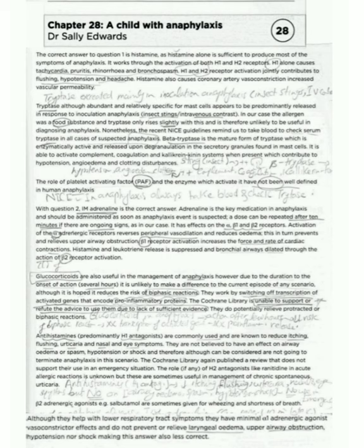The role, if any, of H2 antagonists like ranitidine in acute allergic reactions is unknown, but these are sometimes useful in management of chronic spontaneous urticaria. Beta-2 adrenergic agonists, for example salbutamol, are sometimes given for wheezing and shortness of breath. Although they help with lower respiratory tract symptoms, they have minimal alpha-1 adrenergic agonist vasoconstrictor effects and do not prevent or relieve laryngeal edema, upper airway obstruction, hypotension, nor shock, making this answer also less correct.